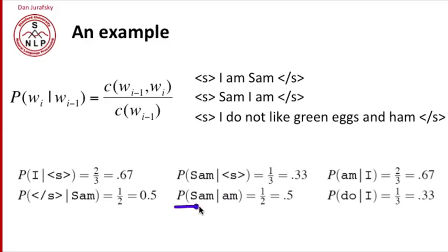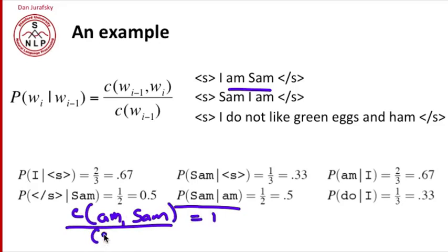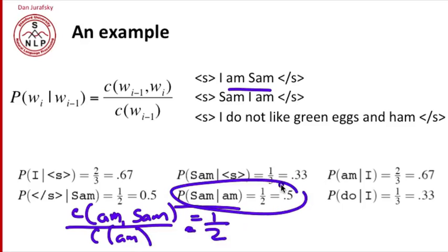The probability of Sam given the word am. How many times does am comma Sam occur? It occurs once. So that's one. And the denominator is how many times does am occur? That occurs twice. So that's going to be 1 over 2. So there's our probability of Sam given am.